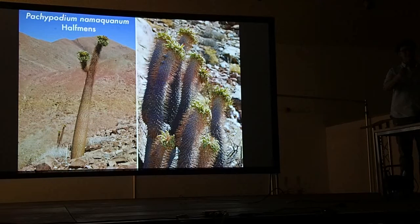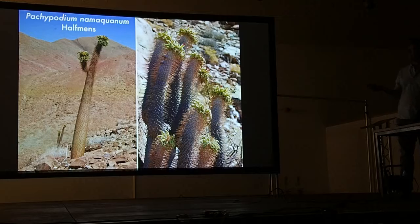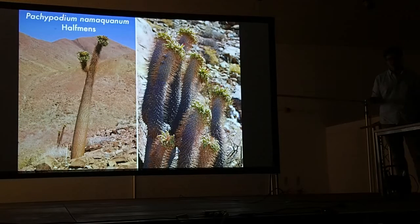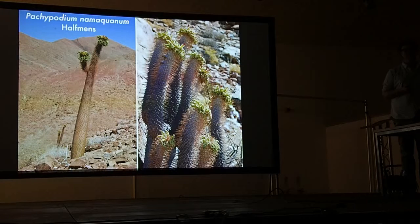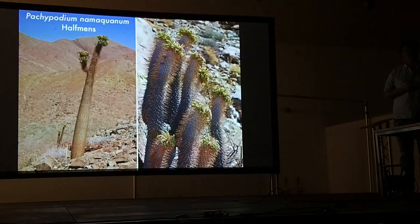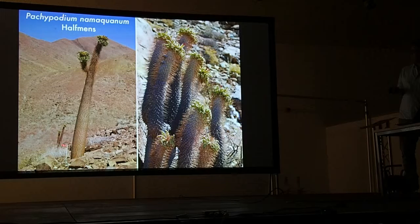This will be the last time I mention Pachypodium namaquanum. It is probably the most iconic plant of the Richtersveld and is known as the Halfmen. It grows on southern slopes and has a very characteristic lean — it leans to the north. Legend has it that the Nama people who lived in Namaqualand were fleeing foreign invaders, ran into the Richtersveld, and their god turned them into plants. This characteristic lean to the north is them looking back to their ancestral homeland, knowing they'll never return. In fact, the lean north is more to do with getting more winter sun by heading in that direction.